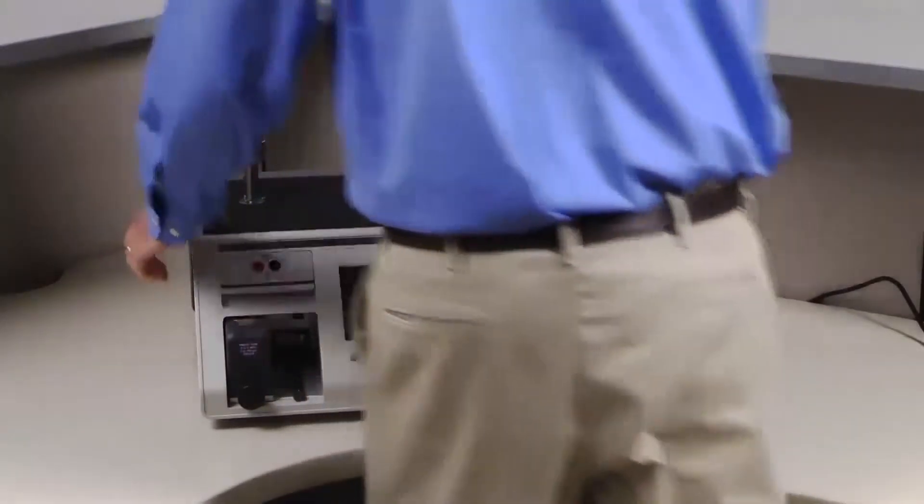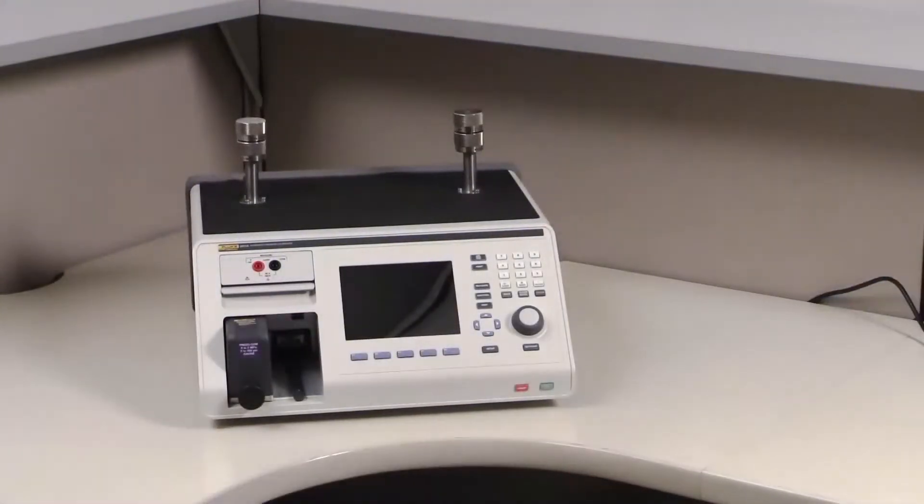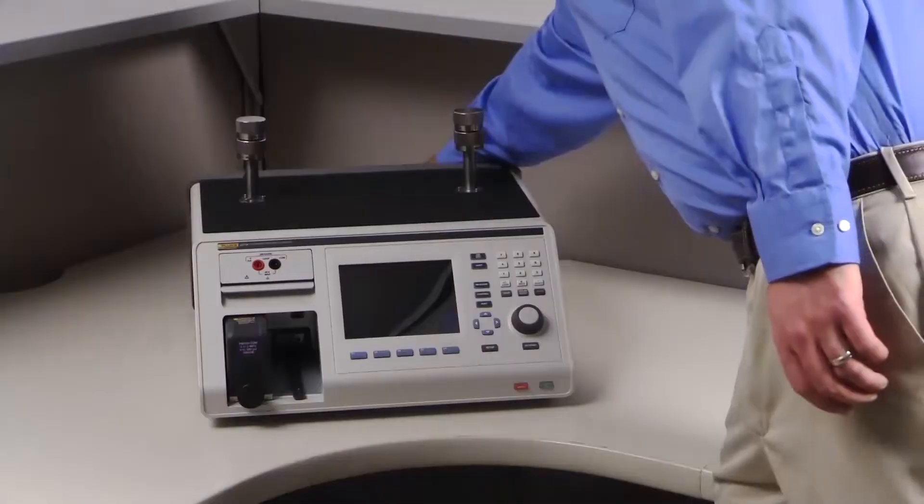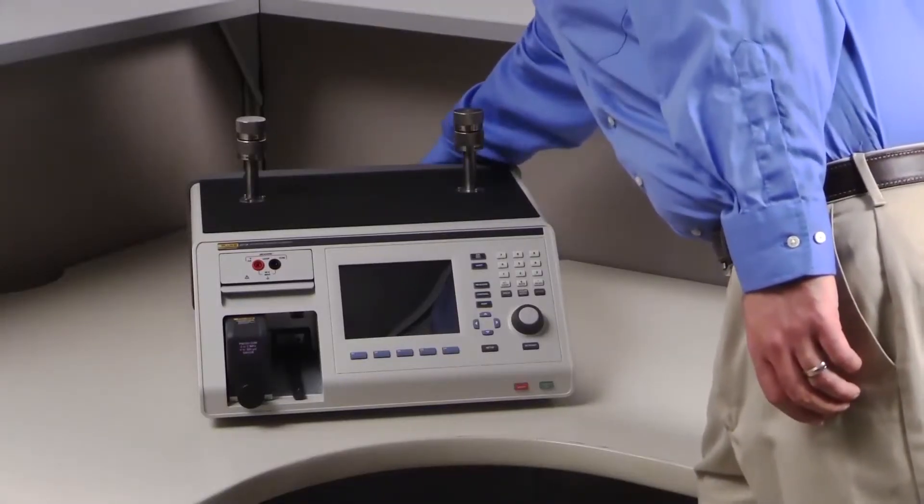The 2271A can be installed on any flat, sturdy work surface. Simply connect to a regulated supply pressure to begin controlling pressure.